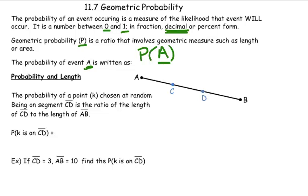So if we look at the geometric probability, let's look at probability in length. So I have a segment here from A to B, segment AB. And within segment AB, we have another segment, CD, right here.